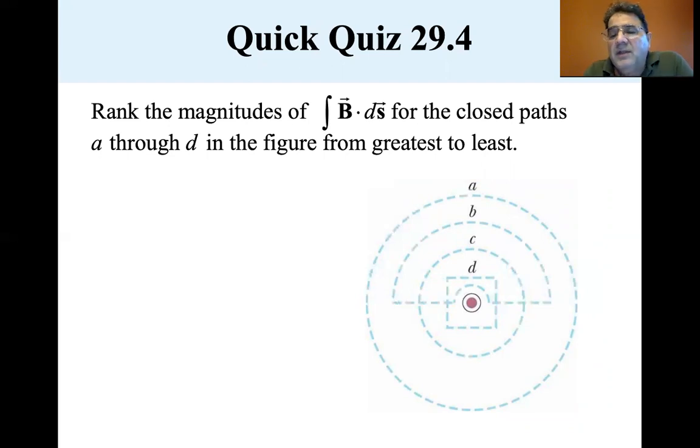A goes all around the current. B starts to go around, comes across, skips over the current and goes around. So the current isn't enclosed by B. C encloses it, just a smaller radius than A. And then D encloses it, a closed path. It's a square, not a circle. So as long as they enclose the current, they're all equal to mu zero I.